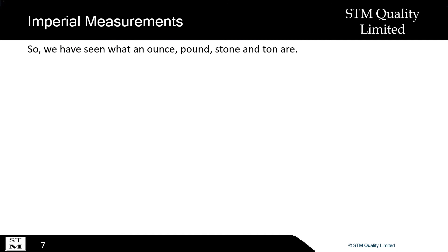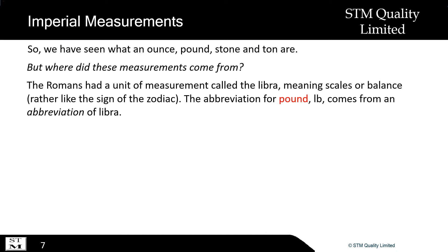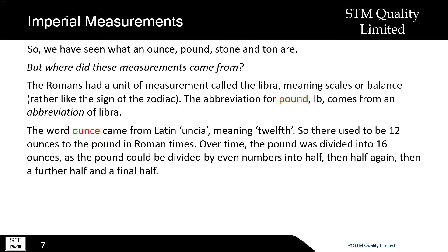So we have seen what an ounce, pound, stone and tonne are — but where did these measurements come from? The Romans had a unit of measurement called the Libra, meaning scales or balance, rather like the sign of the zodiac. The abbreviation for pound comes from an abbreviation of Libra. The word ounce came from Latin uncia, meaning twelfth — so there used to be 12 ounces to the pound in Roman times. Over time, the pound was divided into 16 ounces, as the pound could be divided by even numbers into half, then half again, then a further half and a final half.